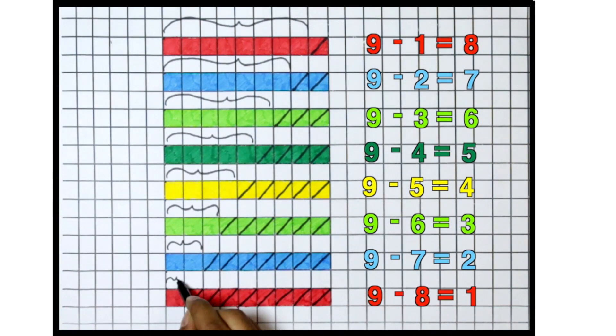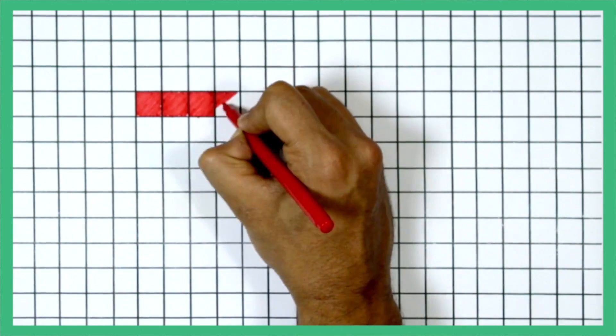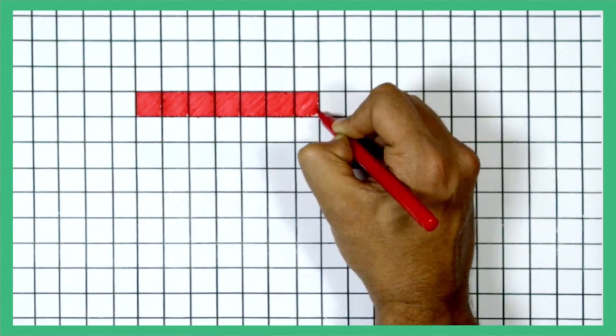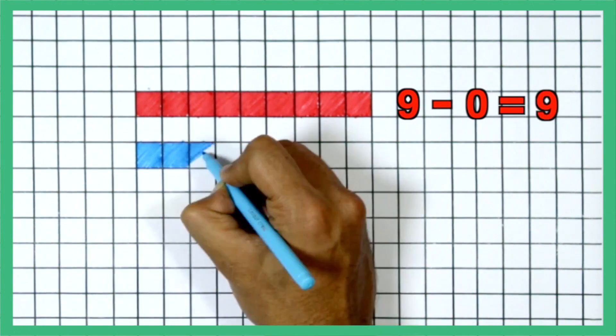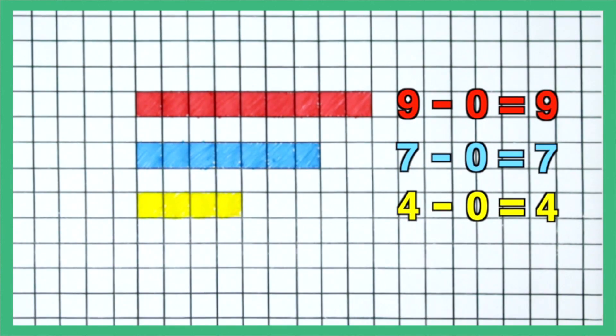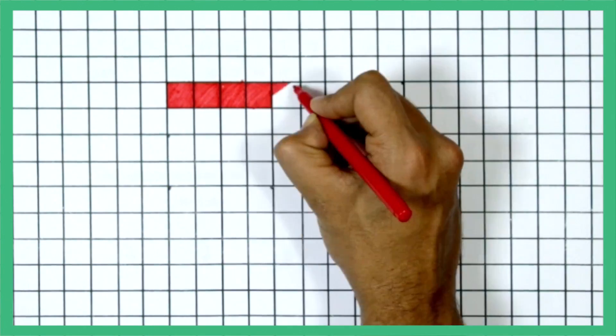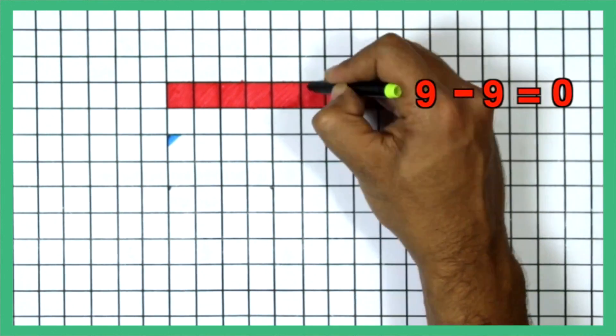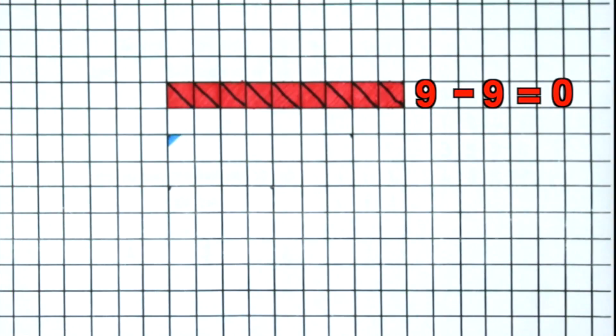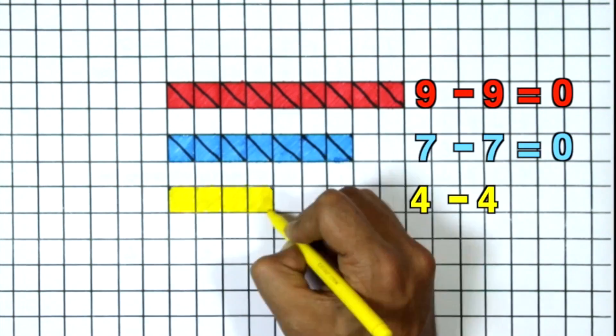Here is 9 for instance. Note that subtracting 0 from any number leaves that number unchanged. 9 minus 0 is 9. On the other hand, subtracting a number from itself gives 0. 9 minus 9 is 0.